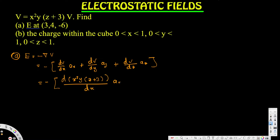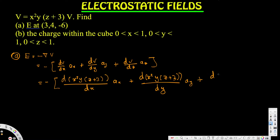We write it as: negative of d/dx of (x²yz + 3) in the ax direction, plus d/dy of (x²yz + 3) in the ay direction, plus d/dz of (x²yz + 3) in the az direction.